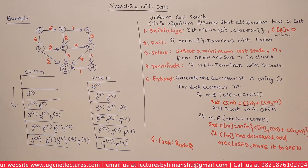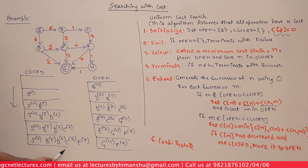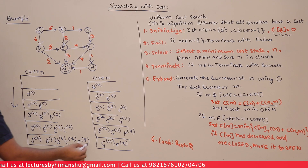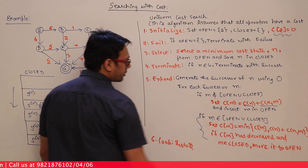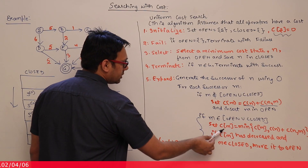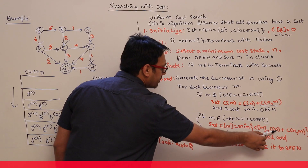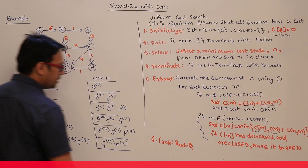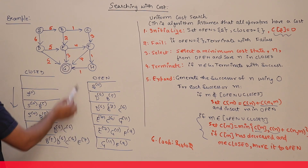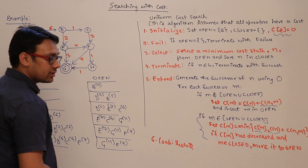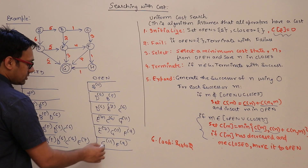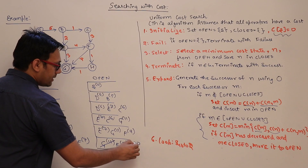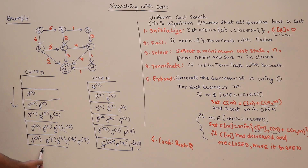Closed now contains S(0), B(5), D(6), C(6), E(7). The only successor of E is G. The cost from E to G is 7 + 3 = 10. G is already present in open with cost 11. Since 10 is less than 11, the cost is decreased, so we update G's cost to 10. If G had been in closed, we would move it back to open.